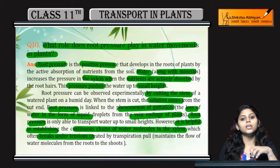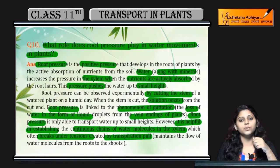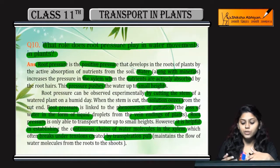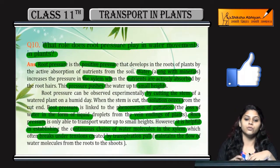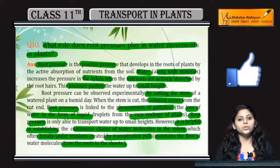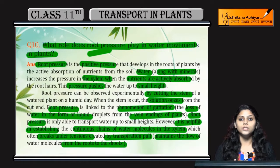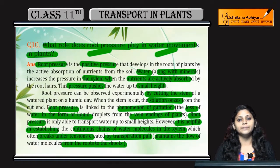Joh chain break ho sakti hai agar kuchh tensions ho transpiration pull ki wajze se. Because transpiration pull joh hai, woh maintain karke rakhta hai water flow ko from roots to shoot. So ye tha root pressure ke roles water movement mein, jab plants mein water movement hooti hai.